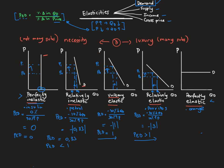The perfectly elastic case deals with a product like an orange — it has no special features but has lots of substitutes. If the price increases too much, people simply consume another product. In this situation, which represents perfect competition, the price does not change. Whatever happens to quantity demanded, the denominator is zero, so our answer is undefined. We classify this with an infinity sign: the price elasticity of demand equals infinity.